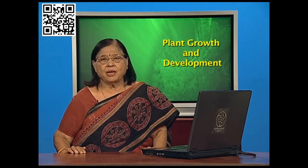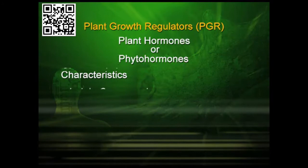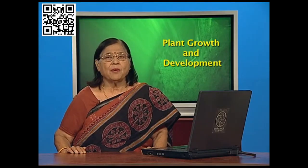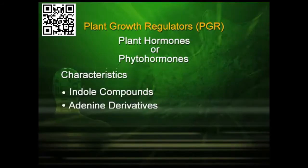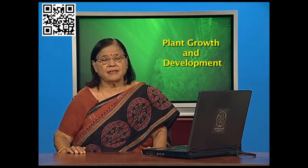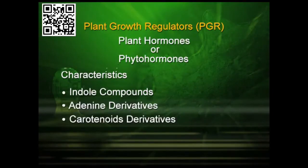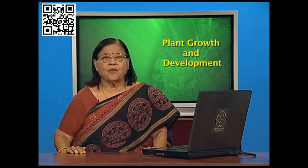What may be the chemical nature of these regulators? After all, these are chemicals in one sense of the word. Major characteristics of these regulators are that they may be indole compounds, or they may belong to adenine derivatives — you have heard about adenine in connection with DNA and RNA. They may also be carotenoid derivatives, terpenes, or in a gaseous form like ethylene.